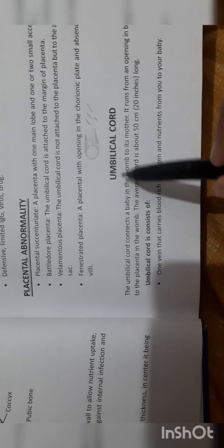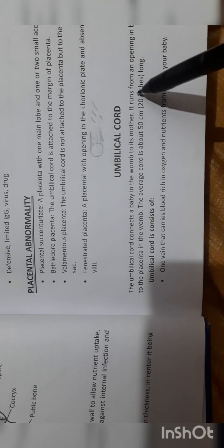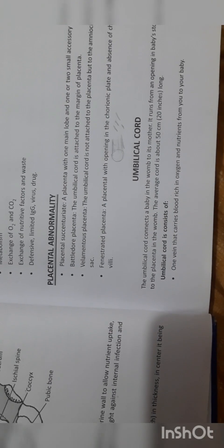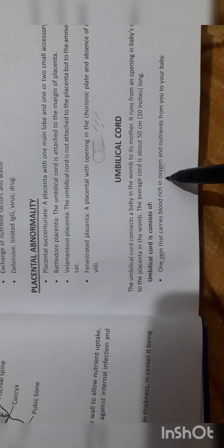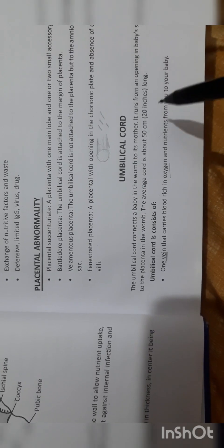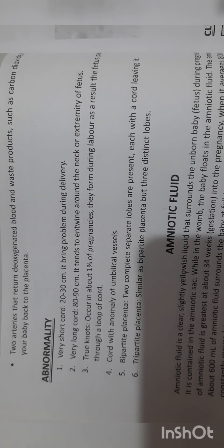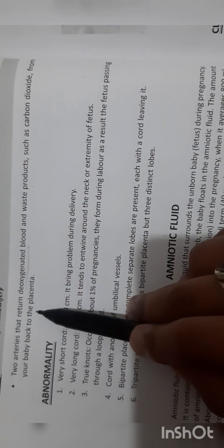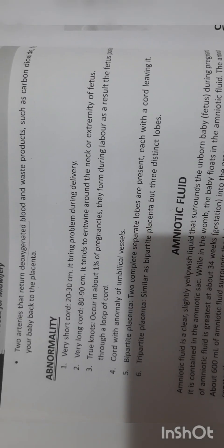The umbilical cord runs from an opening in the baby's stomach to the placenta in the womb. The umbilical cord consists of one vein that carries blood rich in oxygen and nutrients from the mother to the baby, and two arteries that carry deoxygenated blood and waste products such as carbon dioxide from the baby back to the placenta.